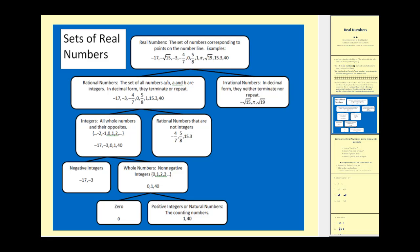This tree of real numbers gives you a pretty good idea of the different types of real numbers. So again, real numbers are the set of numbers corresponding to any point on the number line. Here is a variety of examples. All real numbers are either rational or irrational numbers.